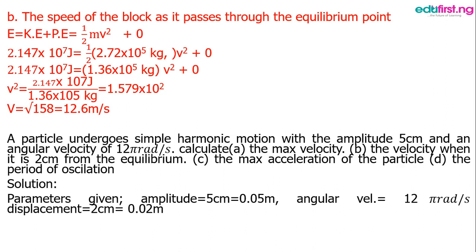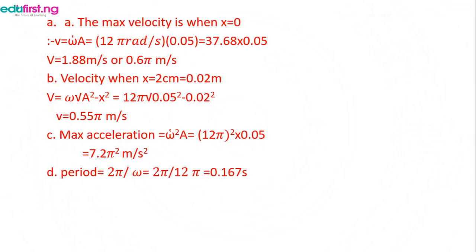Maximum velocity occurs when displacement equals zero, so v_max equals omega times a. With omega equals 12 pi and a equals 0.05 m, we get v_max equals 12 pi times 0.05 equals 1.88 m/s, or 0.6 pi if we leave pi unchanged.